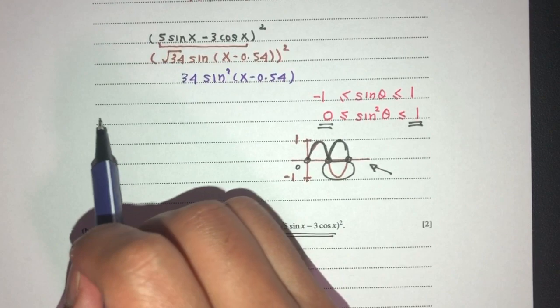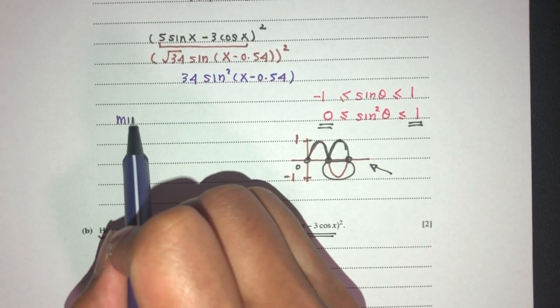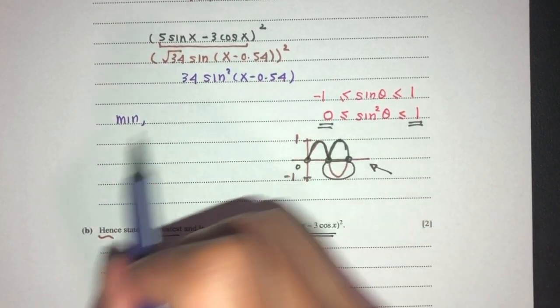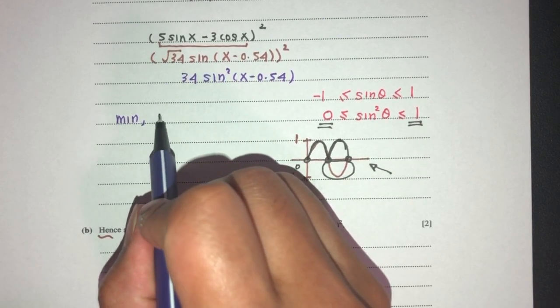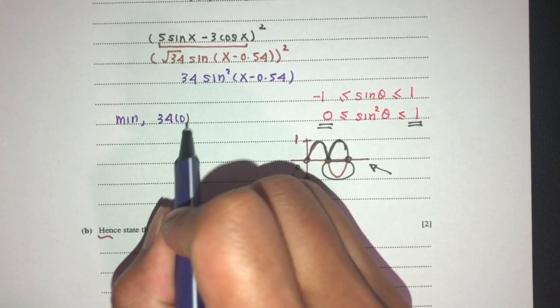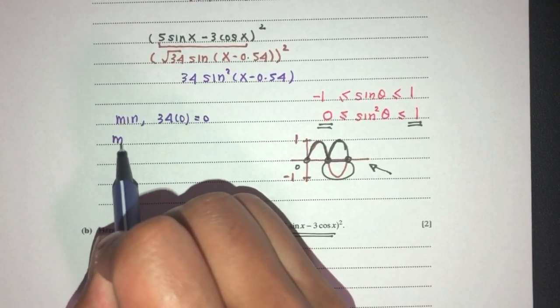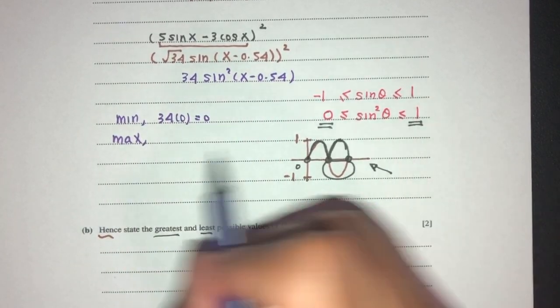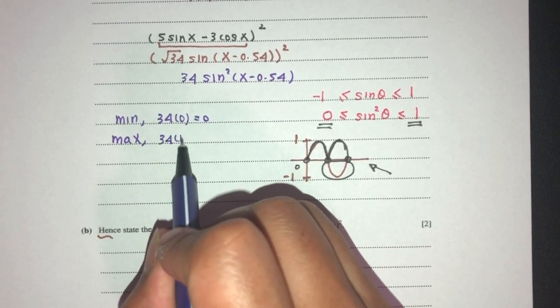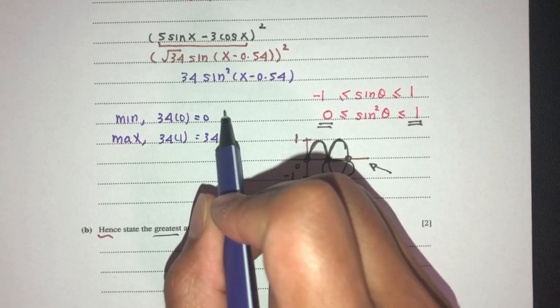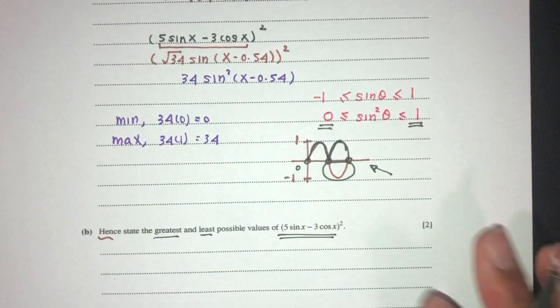So, what is the min value? Min value should be - this will be 0. So you will become 34 times 0. That will be 0. Now, what is the max value? It is 1. So that will be 34 times 1. That will be 34. So min and max, here we go. This is your question number 2.